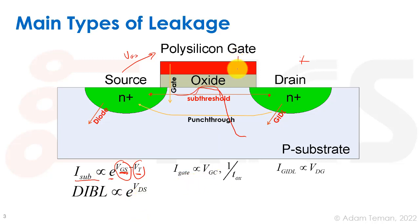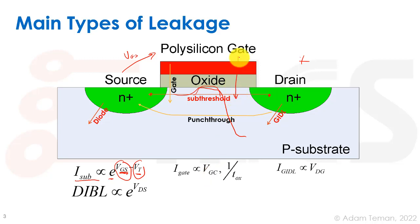Gate leakage is leakage that goes through the gate dielectric — not in the direction of our on-current but against the transistor's purpose. It is obviously dependent on the gate-to-channel voltage swing and therefore dependent on gate voltage. It's also dependent on the thickness of the oxide, which determines how strong the potential barrier is.